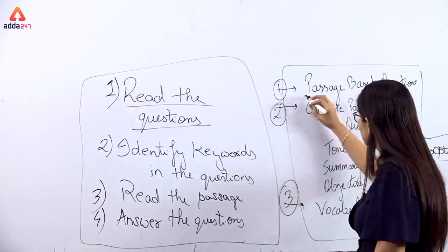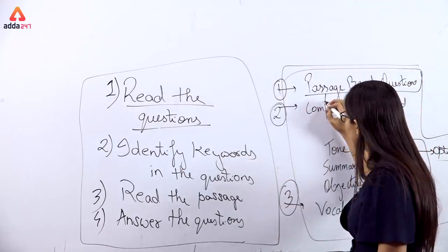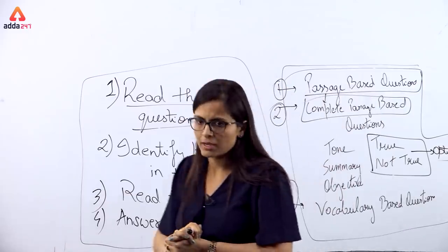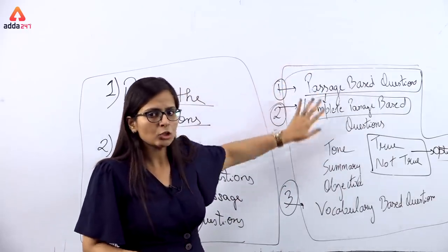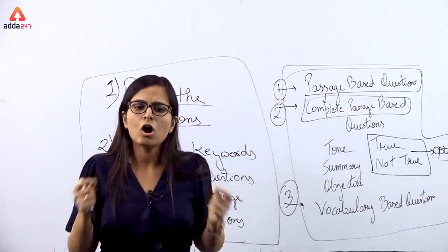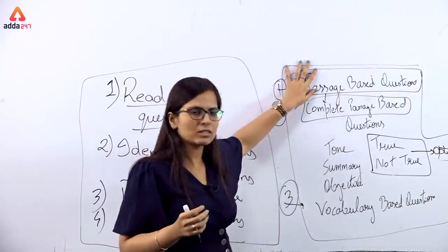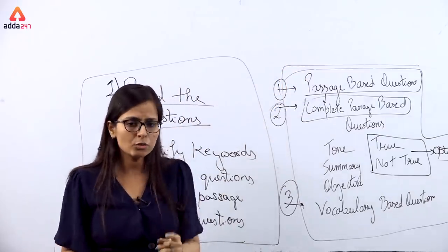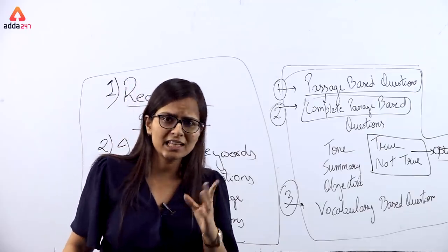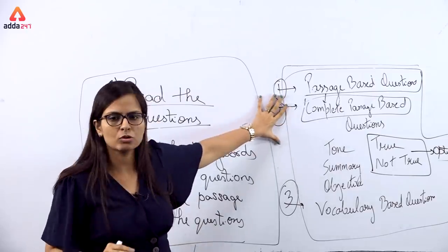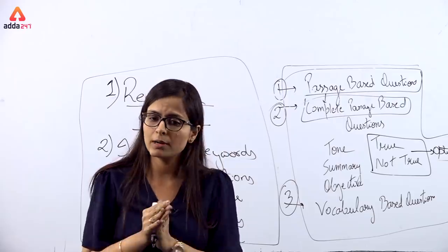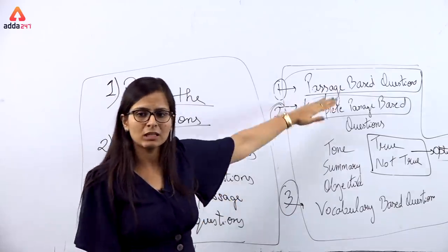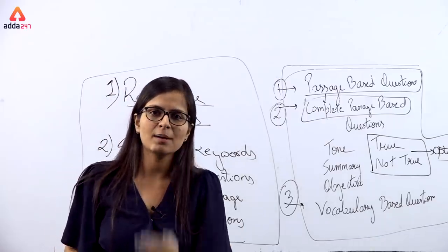Why this order? Because when you are solving passage-based questions, you will automatically get information that helps answer complete passage-based questions — you will understand the tone and objective of the author. And when you are solving those, you will also be able to handle vocabulary questions, because you read the surrounding lines where the word appears and can judge its contextual meaning.